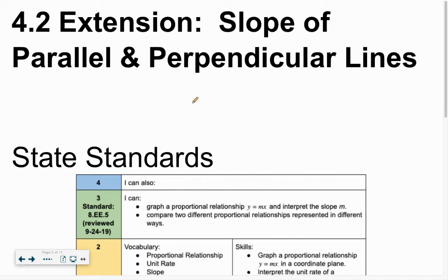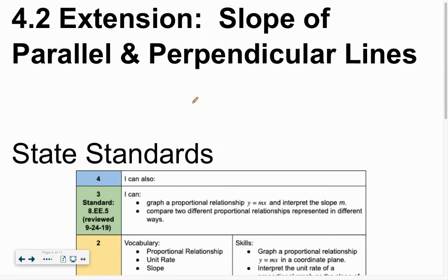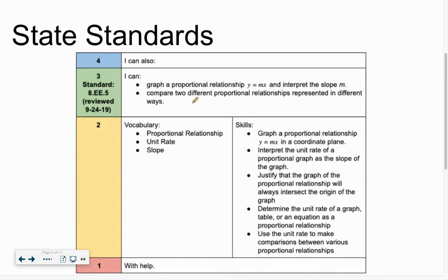Chapter 4, Lesson 2, an extension. It's called the Slope of Parallel and Perpendicular Lines. So we're going to build on our previous lesson of Slope and talk specifically about two unique types of lines, Parallel and Perpendicular.